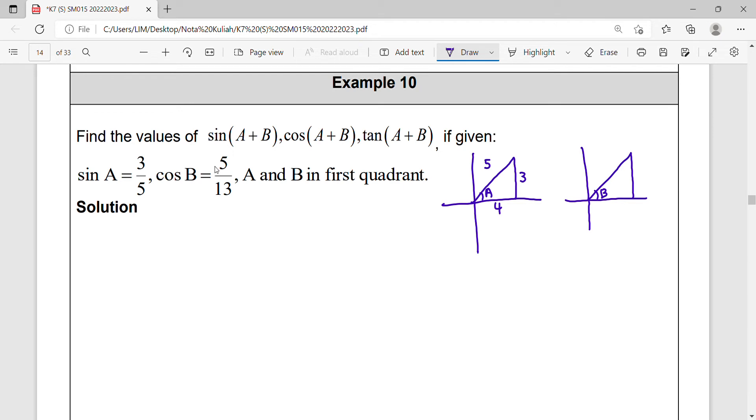For angle B, cosine refers to your adjacent 5 over hypotenuse 13, so your opposite length will be 12. Get all these lengths so that you can express them in their ratio.